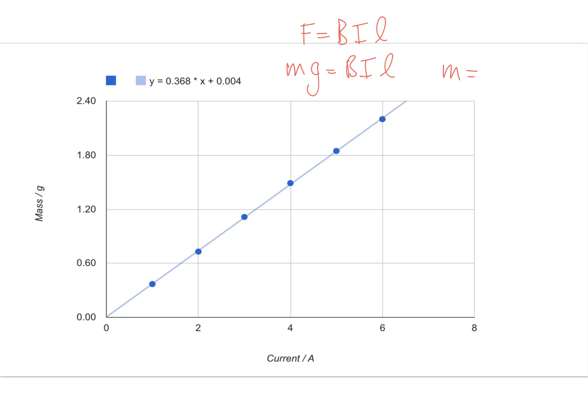So, therefore, you can see that the equation of a straight line indicates that if you plot Y as M and X as I, you will get the gradient to be B, L, over G and it should go through zero. So, therefore, my gradient here is going to be B, L, over G and it should go through zero.